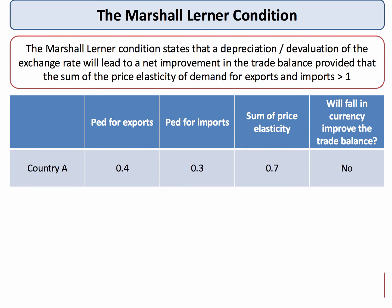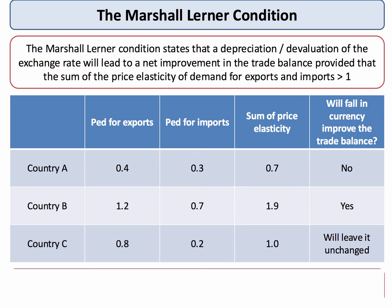Here's a couple of examples. Country A has very low price elasticities both for exports and imports, the sum of which is less than one — 0.7. Will a fall in the currency improve the trade balance? Other things being the same, the answer is no. However, for Country B, the demand for exports is price elastic and demand for imports is less inelastic than Country A. The sum of the elasticities is 1.9, which satisfies the Marshall-Lerner condition — yes, a fall in the currency will improve the trade balance. In Country C, inelastic demand for exports of 0.8 and very inelastic demand for imports of 0.2 sum to 1, so a fall in the currency will broadly speaking leave the balance of trade unchanged.